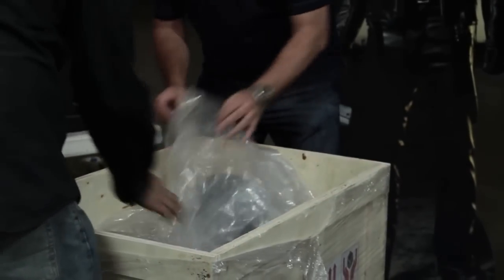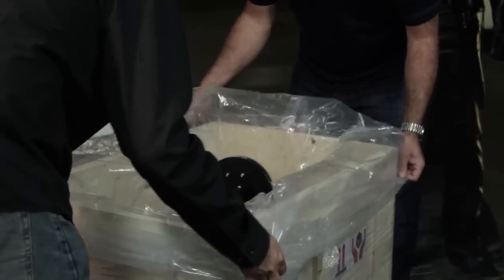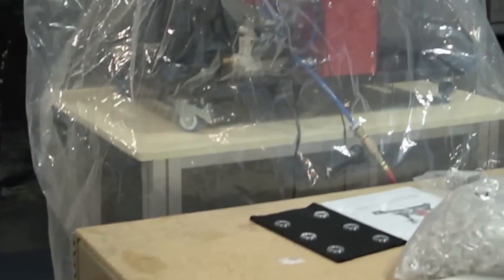Carefully open protective bag and wrap excess around the outside of the crate to expose everything inside the crate. Hint, this large protective bag can be used as a dust cover once the installation is complete so try to keep it intact. Remove contents from around the grominator.